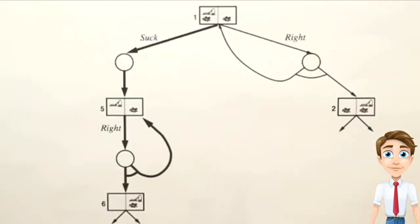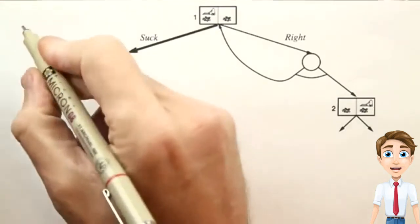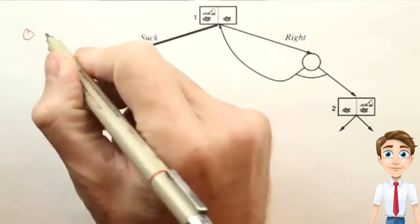Now, I've told you what a successful plan looks like, but I haven't told you how to find one. The process of finding it can be done through a search, just as we did in problem solving. So remember in problem solving, we start off in a state, and it's a single state, not a belief state.